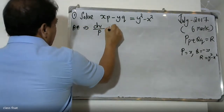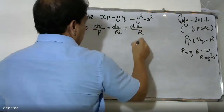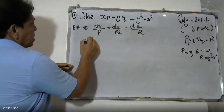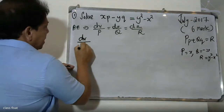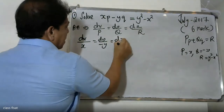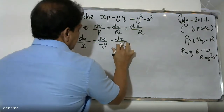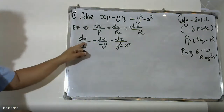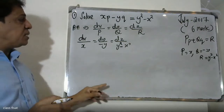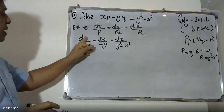The auxiliary equation is dx/P = dy/Q = dz/R. Substituting the values of P, Q, and R, we get dx/x = dy/(−y) = dz/(y² − x²). This gives us the auxiliary equation with the first, second, and third ratios set up.